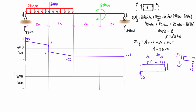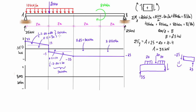Moving on to the bending moment diagram — we take the areas under the shear force diagram. In the first region, the area is 50 kilonewton-meters and the shear is a sloped line, so we get a parabolic curve tending toward the positive side, going from 0 up to 50 kilonewton-meters. In the next region we have an area of 30, dropping parabolically to 50 minus 30 = 20 kilonewton-meters. In the following region the area is 50 on the negative side, dropping from 20 down to minus 30.